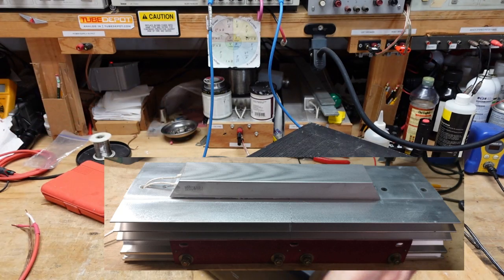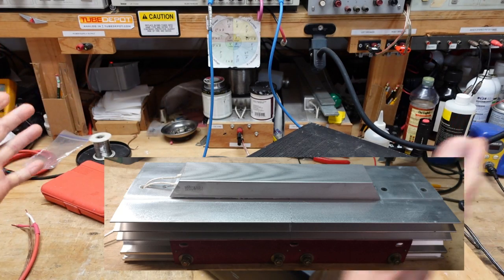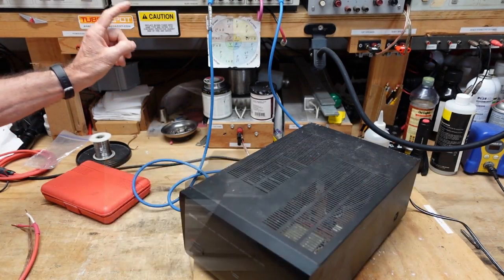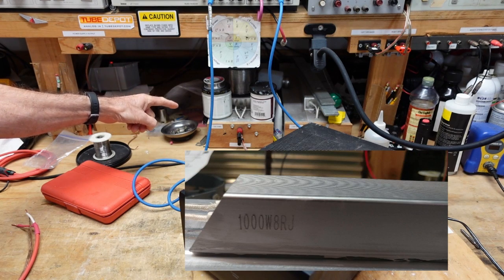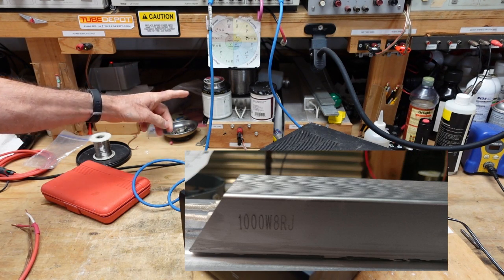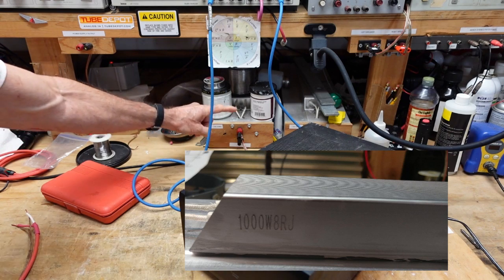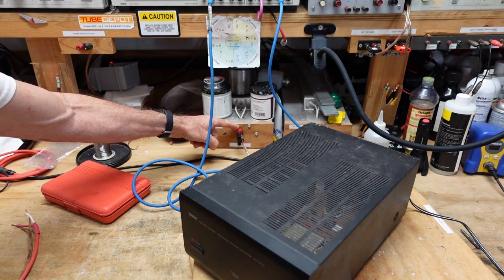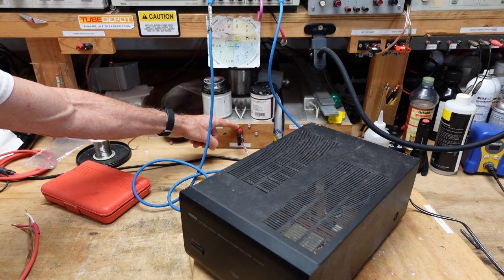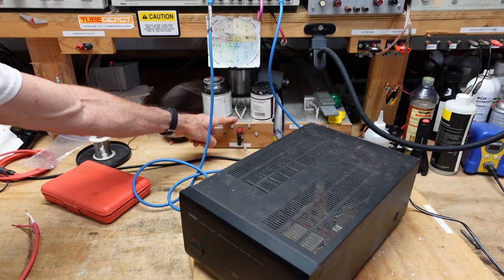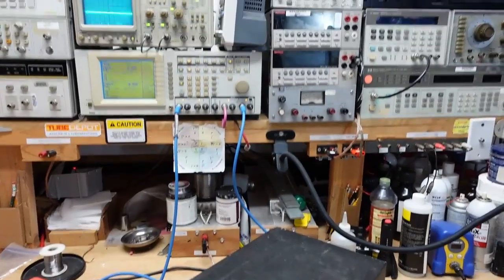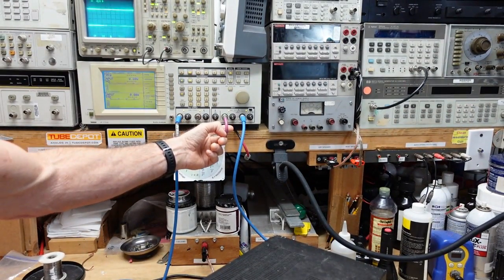They're about that long. They have 1000 watt 8 ohm load resistors. And I have banana plugs on the front here, or jacks. And tapped right off the back of that, I have BNC connectors that go up here into the analyzer.